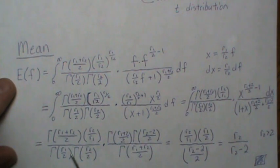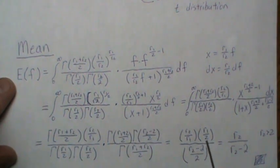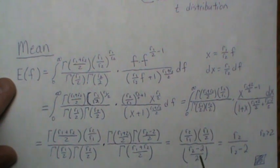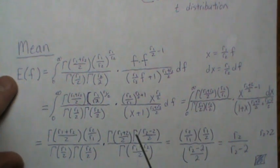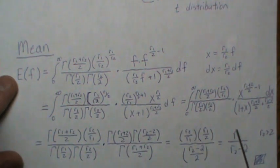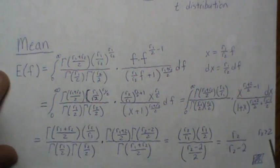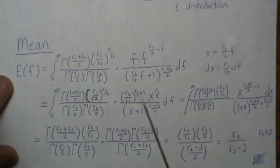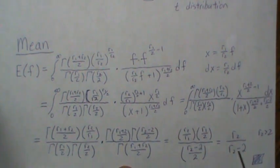And then this one cancels with that, but there's a r1 divided by 2 left over. And this one goes into here, but there is an r2 minus 2 over 2 left over. And I have a video on the properties of the gamma distribution. If you want to review that to understand these properties, how you subtract one, and then it's another gamma. Well, then this reduces to r2 divided by r2 minus 2. And this is for r2 greater than 2. And this has to happen for some of these intervals to converge. But this is the mean of an F distribution.